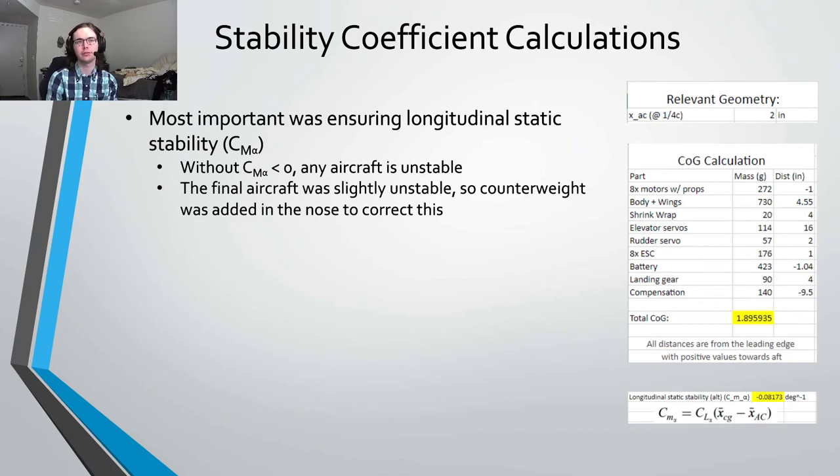We calculated stability derivatives, namely longitudinal static stability, to ensure our aircraft maintains steady flight. A negative CM-alpha requires our center of gravity to be ahead of our aerodynamic center and is needed for an aircraft to tend towards equilibrium if pitched up or down.